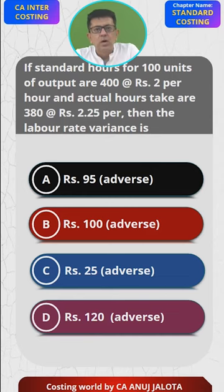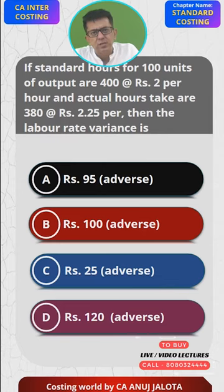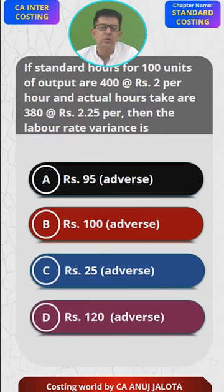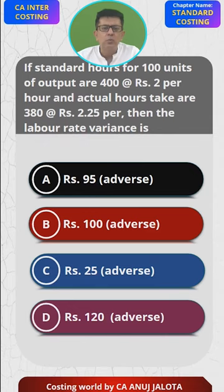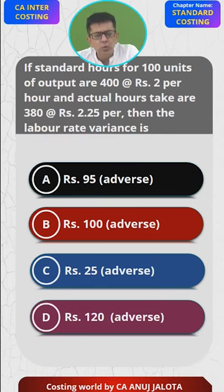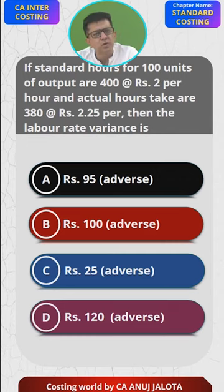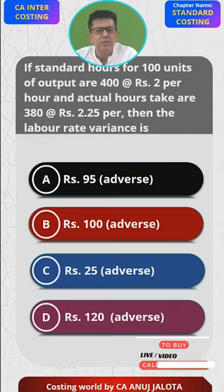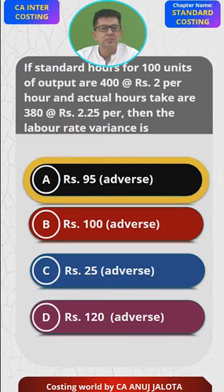So how do you compute labor rate variance? It's the difference of rate. The rate should have been 2, but the actual rate was 2.25, so you paid 0.25 extra. You paid 0.25 extra for 380 actual hours — so 380 × 0.25 = 95. And since you paid a higher rate, it is adverse. So the answer is A — 95 adverse. Easy question!